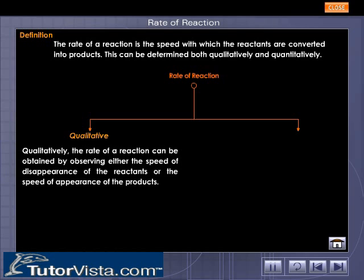Qualitatively, the rate of a reaction can be obtained by observing either the speed of disappearance of the reactants or the speed of appearance of the products.